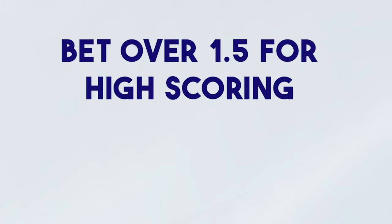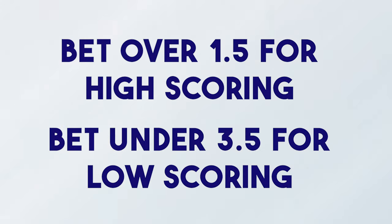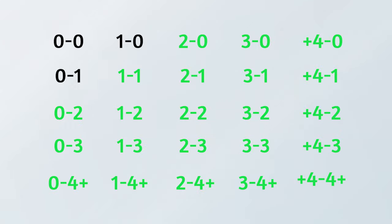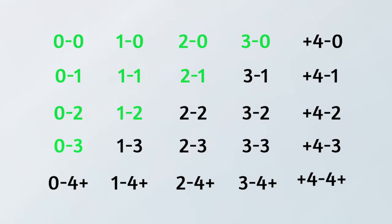That 2.5 range set by the bookmakers is clever, based on years of analysis on how games end. My recommendation is to stay away from over/under 2.5 goals. You've got to beat the bookmakers at their own game and get an extra level of insurance by instead taking the over 1.5 market where you think there will be goals, and the under 3.5 goals market where you think it will be a low-scoring game — opening up far more winning combinations.